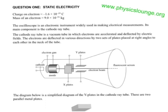The oscilloscope is an electronic instrument widely used in making electrical measurements. Its main component is the cathode ray tube. The cathode ray tube is a vacuum tube in which electrons are accelerated and deflected by electric fields. The electrons are deflected in various directions by two sets of plates placed at right angles to each other in the neck of the tube.